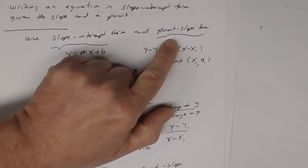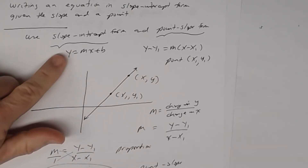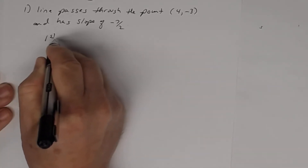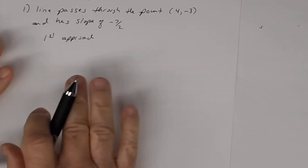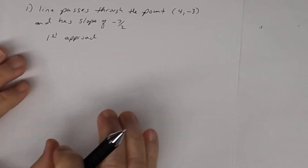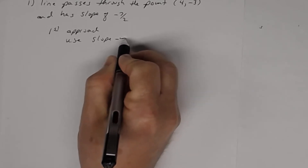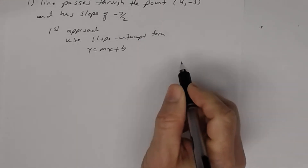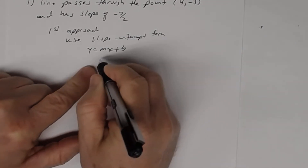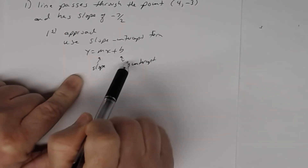There are two ways to find the equation. First approach: use slope-intercept form. When you take a test or do a worksheet, it does not matter which approach you use unless stated in the directions — always follow directions. For slope-intercept form, y equals mx plus b, you must know the slope and the y-intercept. I know the slope, but I don't know the y-intercept.